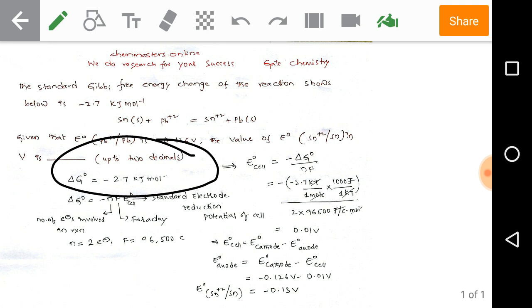The given data is ΔG⁰ equals minus 2.7 kilojoules per mole. We have the formula ΔG⁰ equals minus nFE⁰cell, where n indicates number of electrons involved in the galvanic cell reaction, F is Faraday constant equaling 96,500 coulombs, and E⁰cell is the standard electrode reduction potential of the cell.